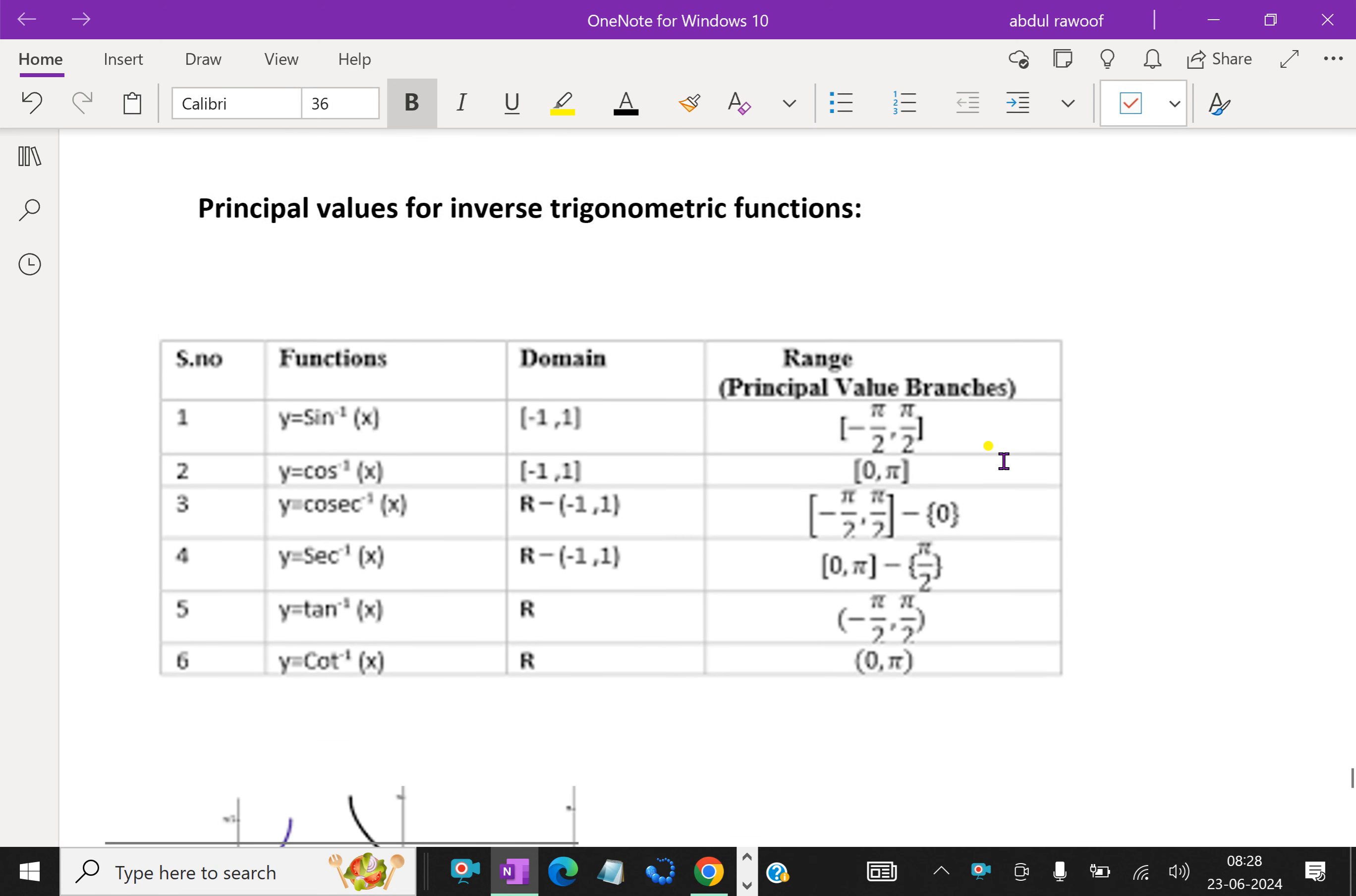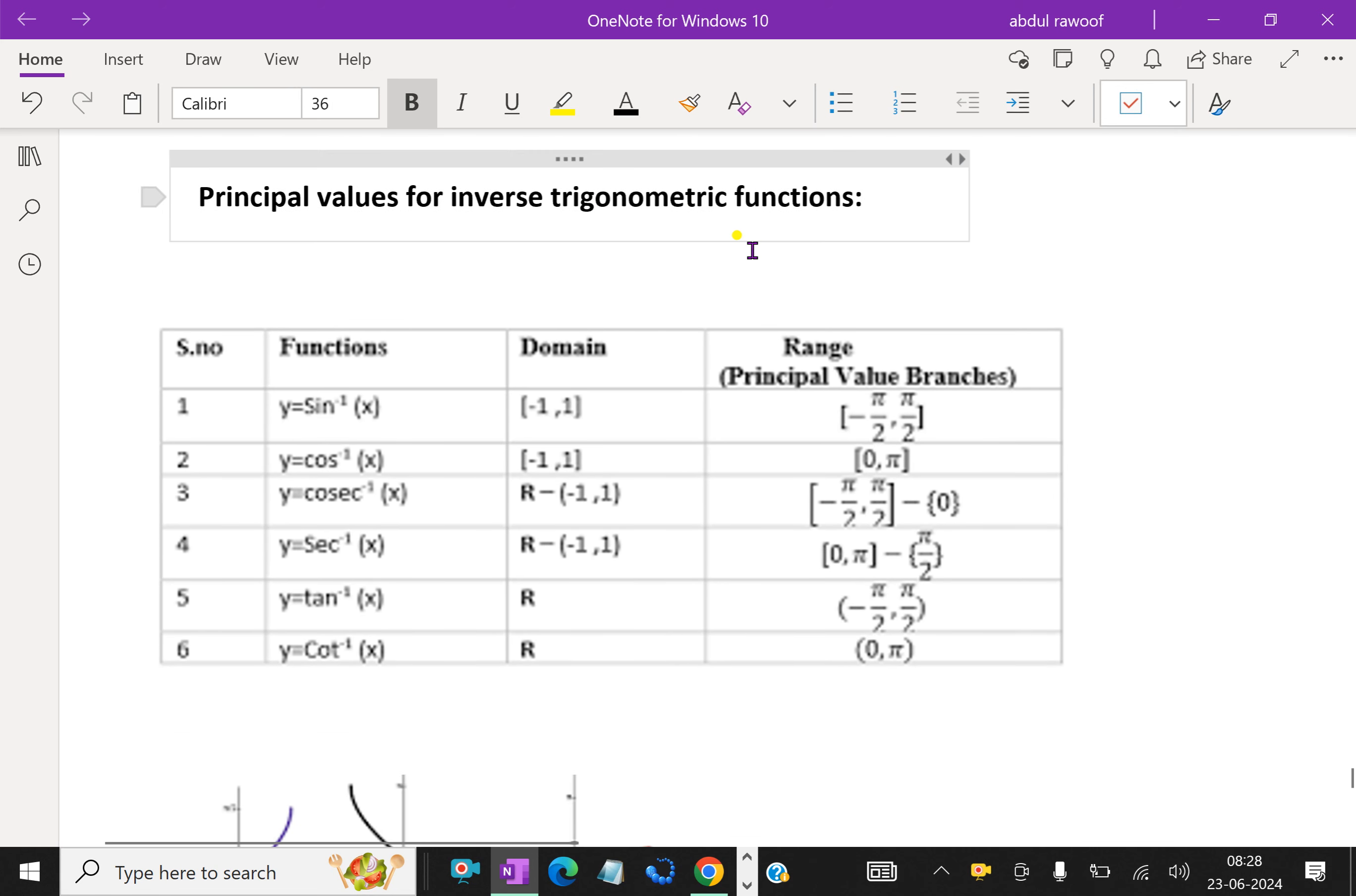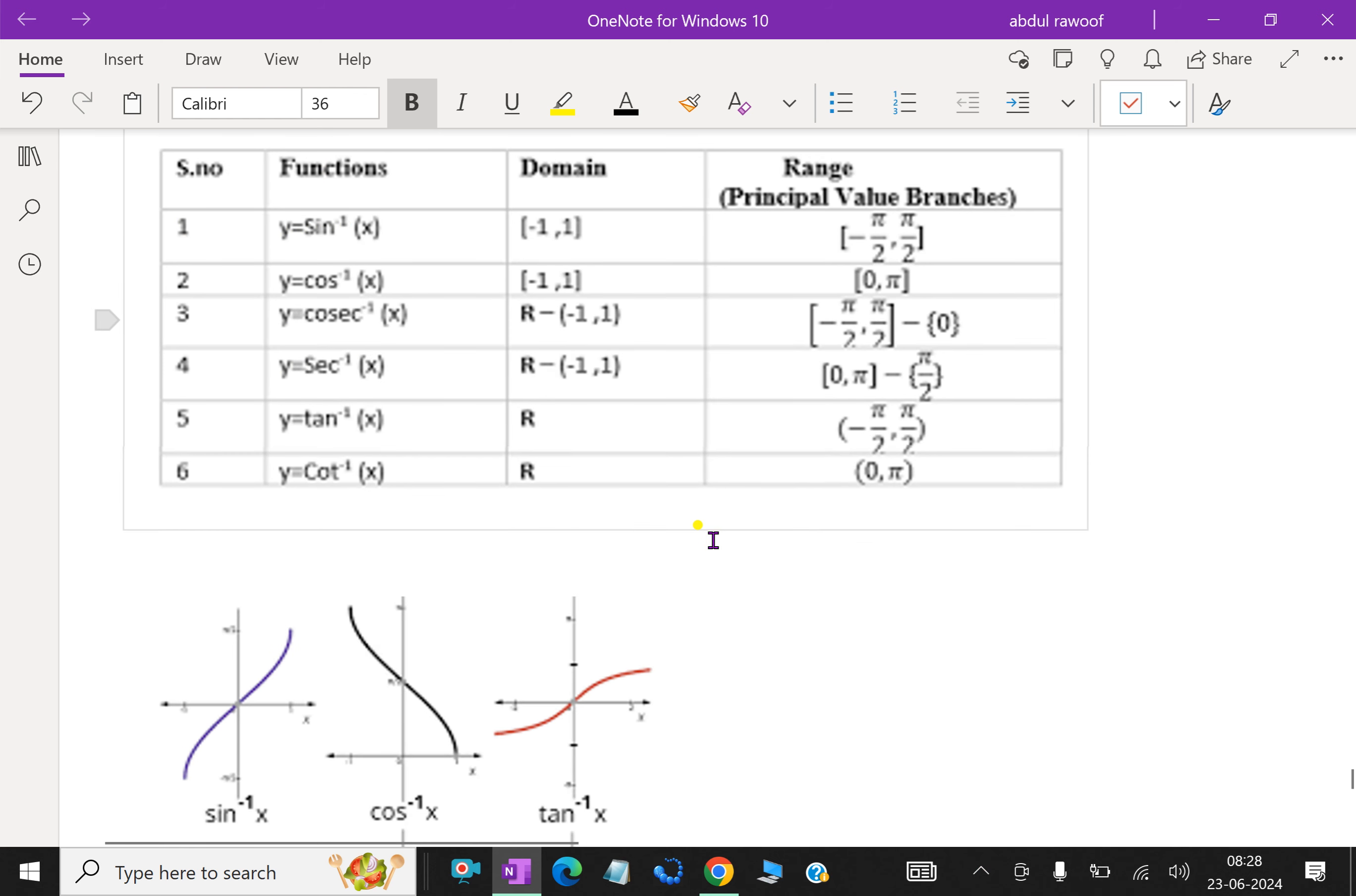First, we will discuss principal values for inverse trigonometric functions. Here the function is y equals sin inverse x. The domain is minus 1 to plus 1. Look at here, the sin inverse graph - minus 1 to plus 1 is the domain. X values are domain. And the principal values range is minus pi by 2 to plus pi by 2.